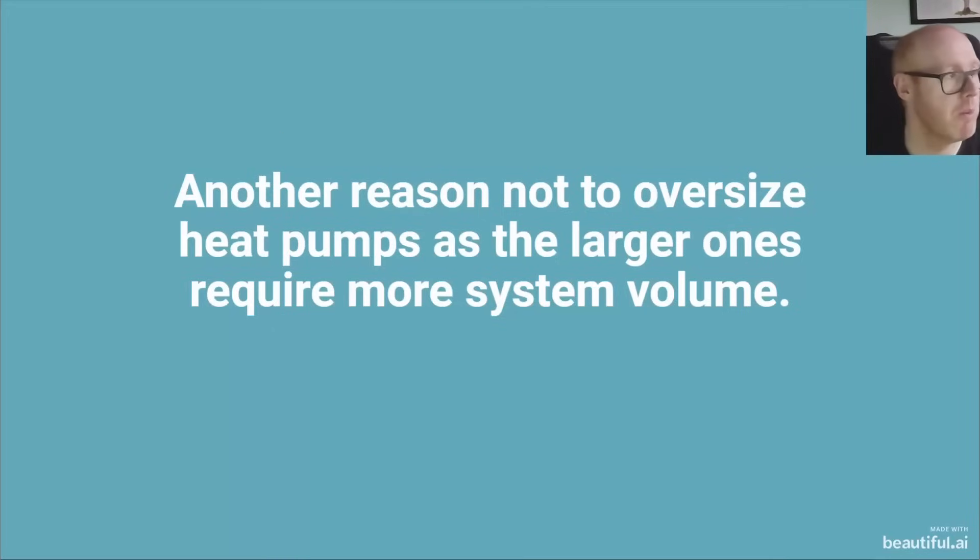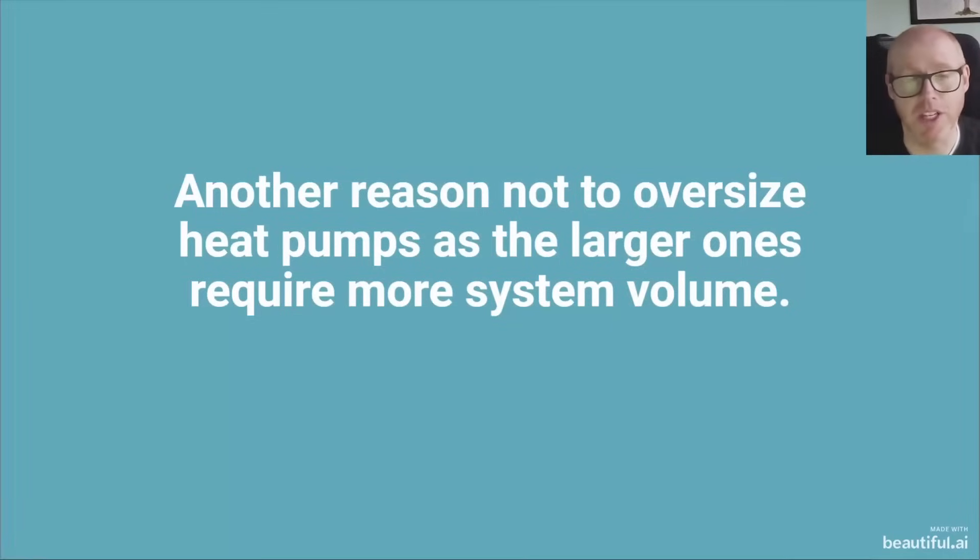If we look at the 12 kilowatts Arotherm Plus, that has a minimum system volume of triple what the 7 kilowatt does, so it goes from 55 litres up to 150 litres. So the difference between a 7 kilowatt heat pump and a 10 kilowatt or 12 kilowatt heat pump in terms of minimum system volume is quite substantial and significant.